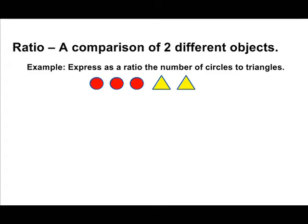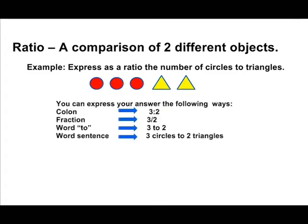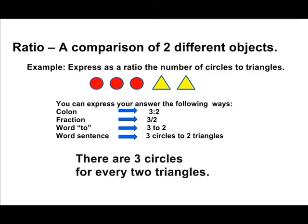There are many different ways to express a ratio. One way is by using a colon — for this example, we could write a 3 separated by a 2. Another way is to write a 3 and a 2 separated by a fraction bar. Another way is by using the word TO. And also you could write a ratio using a word sentence, such as 3 circles compared to 2 triangles.